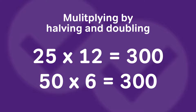Well, 25 times 12 is the exact same thing. If you double 25, you get 50. And if you halve 12, you get 6. So when you double one number and halve the other one, you still end up with the exact same product. But when you're multiplying something that ends in a zero, it's a much easier thing to do. So 25 times 12 — double 25 to get the zero on the end, halve 12 to get 6. 50 times 6 is 300.